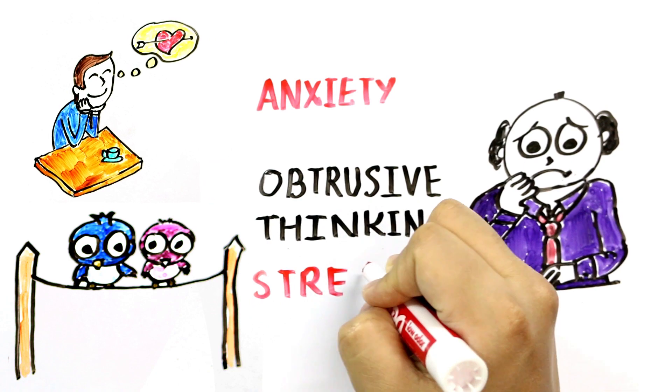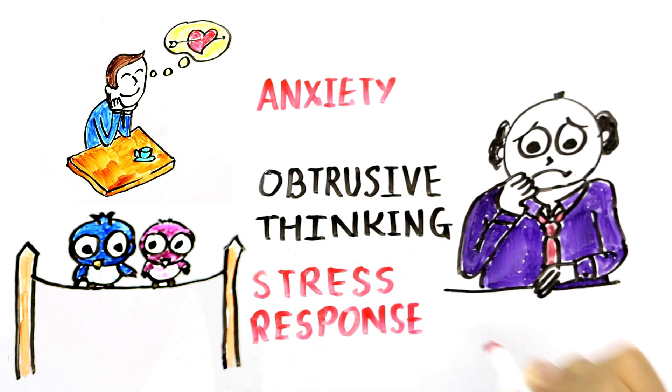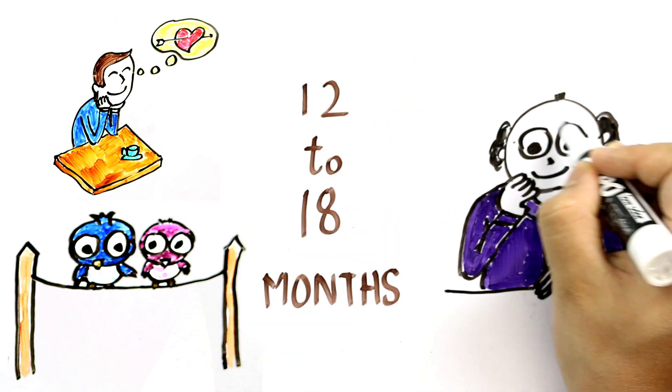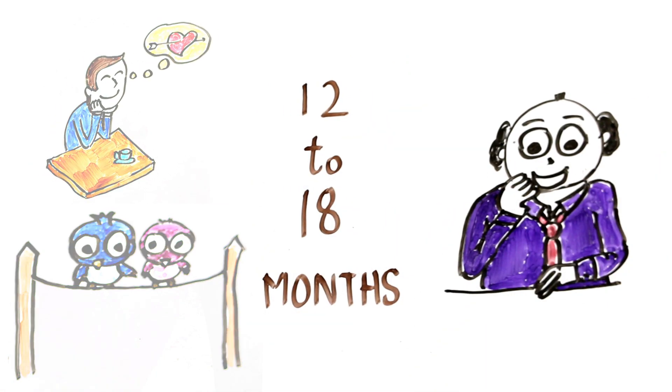Early romance is also characterized by higher levels of several different molecules related to stress response. 12 to 18 months into a relationship, both serotonin and stress molecules are restored to normal levels.